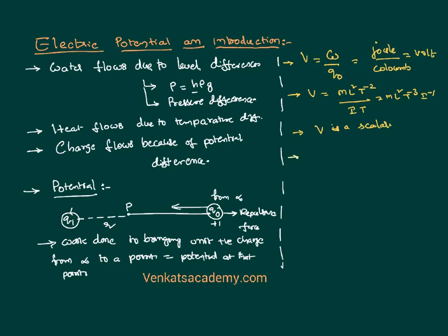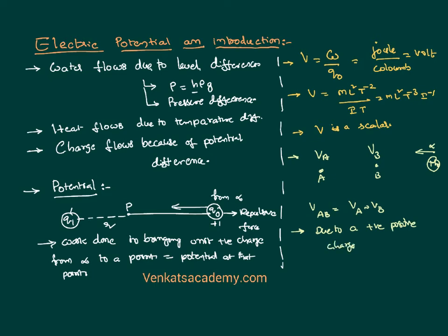Say we are having two points — this is point A, this is point B. I want to bring a unit positive charge Q0 from infinity. If you bring it to point B first, you have to do some work — we call that the potential at point B. Then if you bring it further to point A, there also we need to do some work — we call that the potential at point A. The potential difference between points A and B is equal to the potential at point A minus the potential at point B. If we are calculating the potential due to a positive charge, we treat delta V or V as positive, and vice versa.